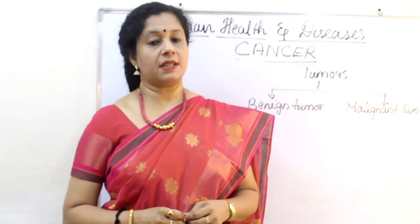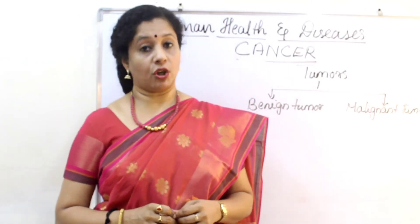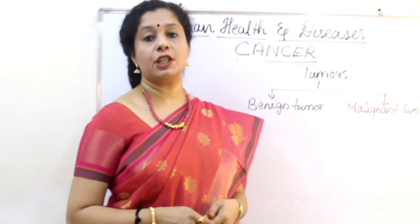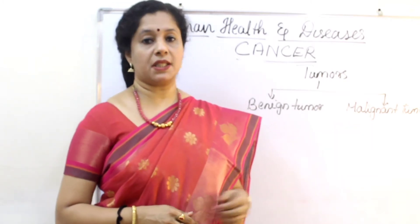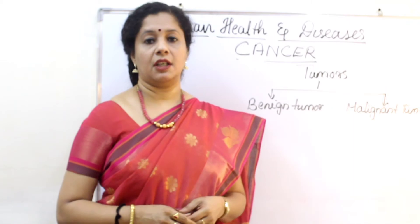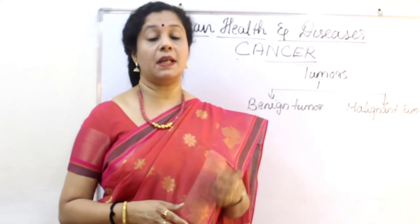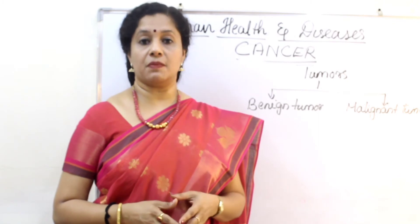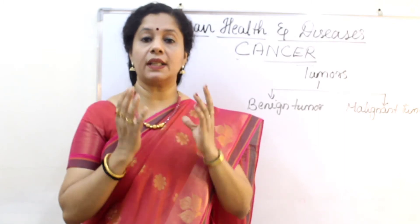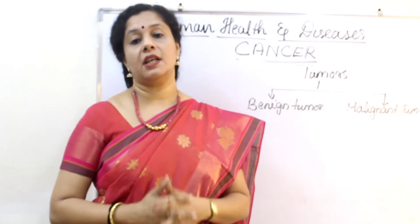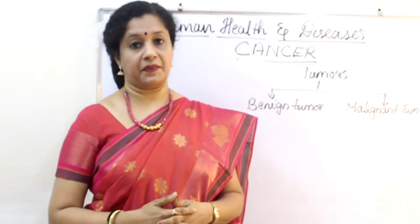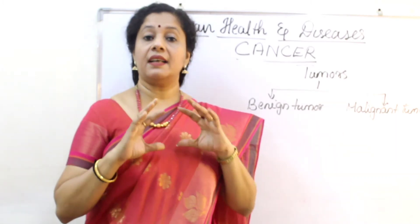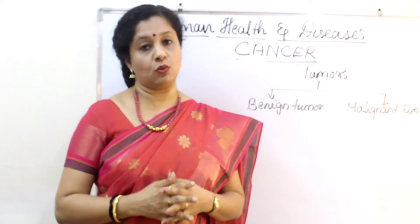Not all tumors are cancerous. Cancerous tumors are called malignant tumors, while other tumors are called benign tumors. Benign tumors have a very smooth, regular, and defined shape or border, whereas malignant tumors have an irregular and undefined, non-smooth structure.